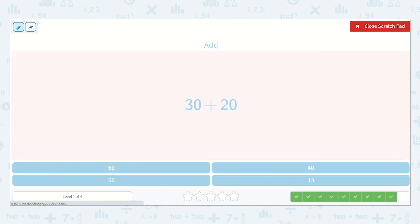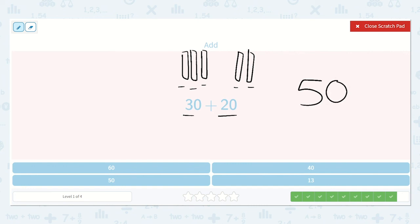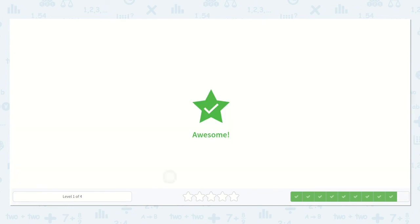Now we have 30 plus 20. 10, 20, 30. I leave my space and then I draw 10, 20. 10, 20, 30, 40, 50. Do you see that answer down below? Yep, right here. 50.